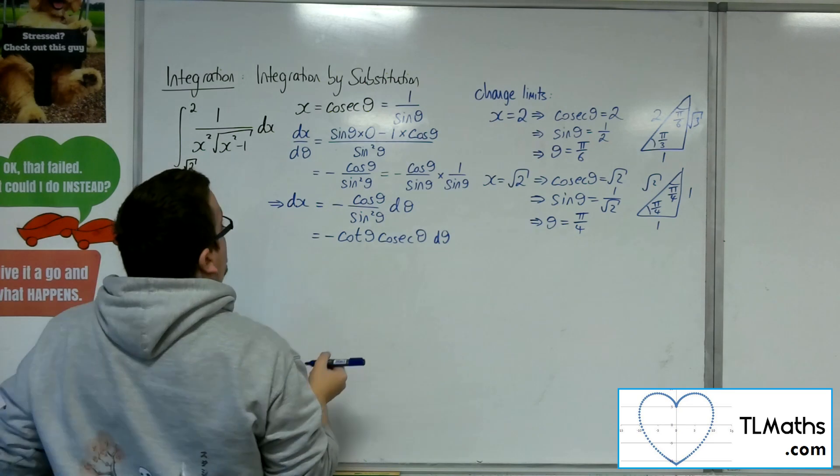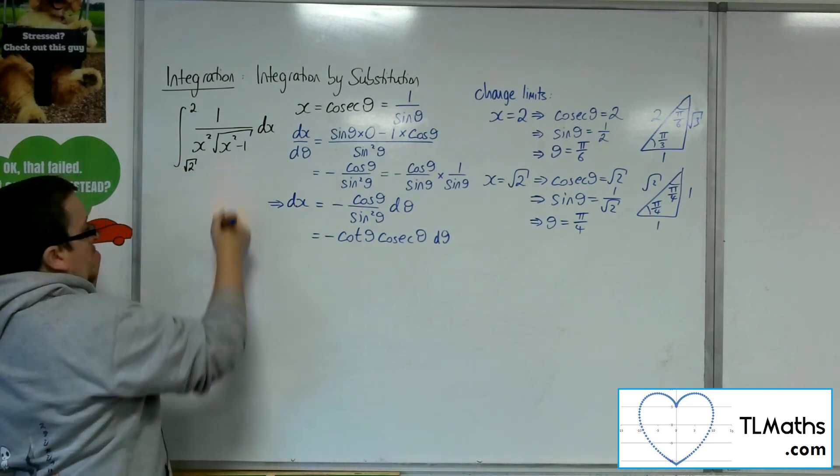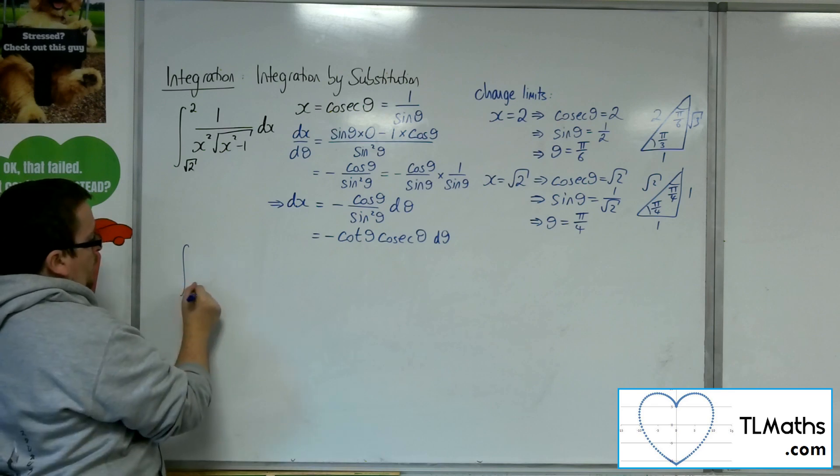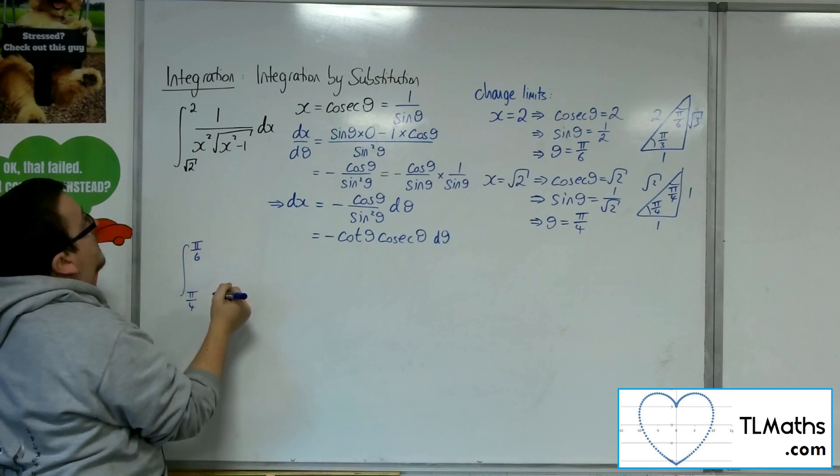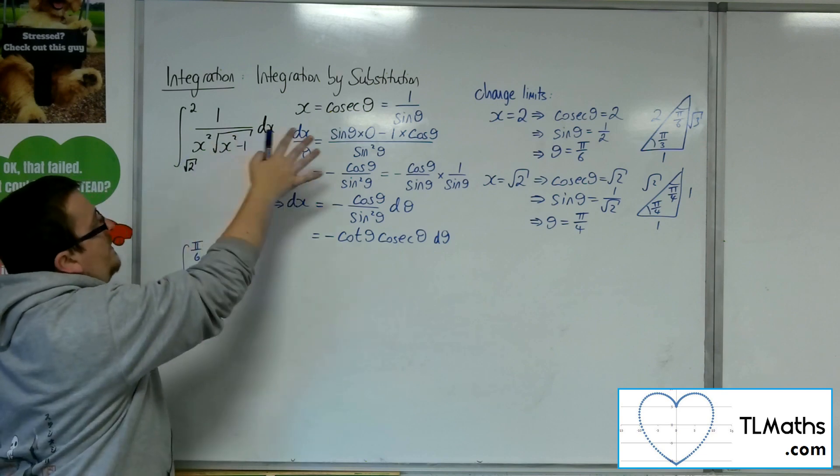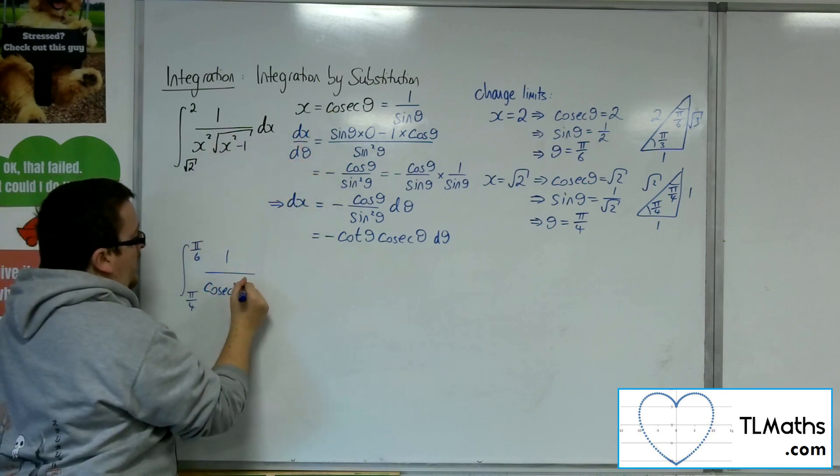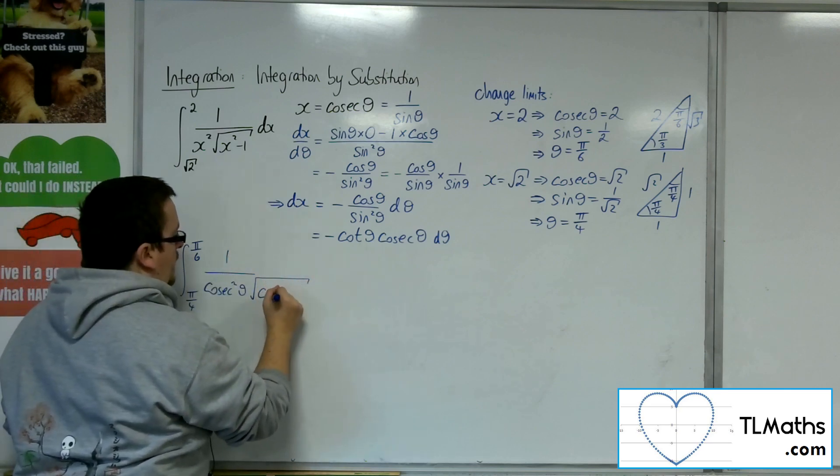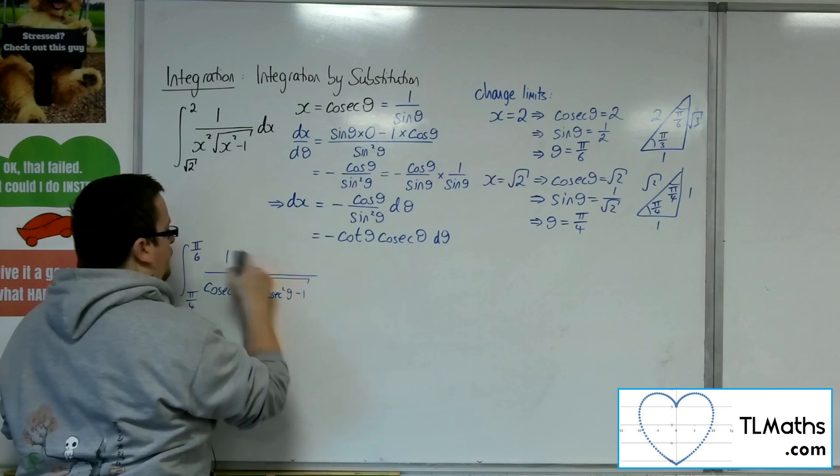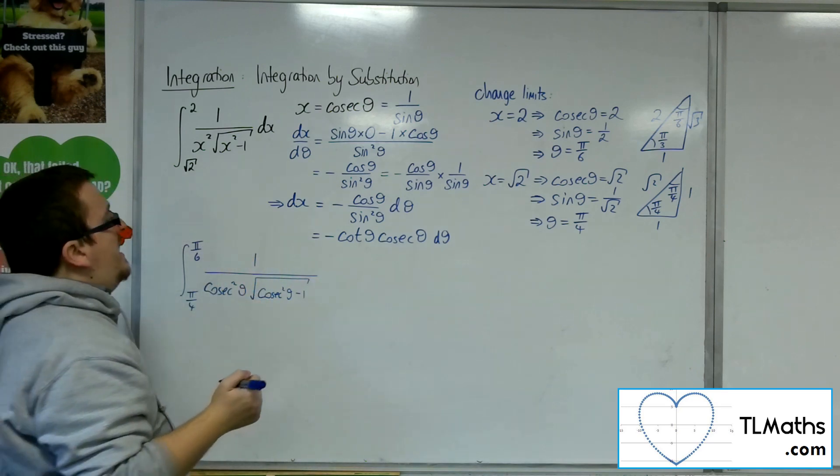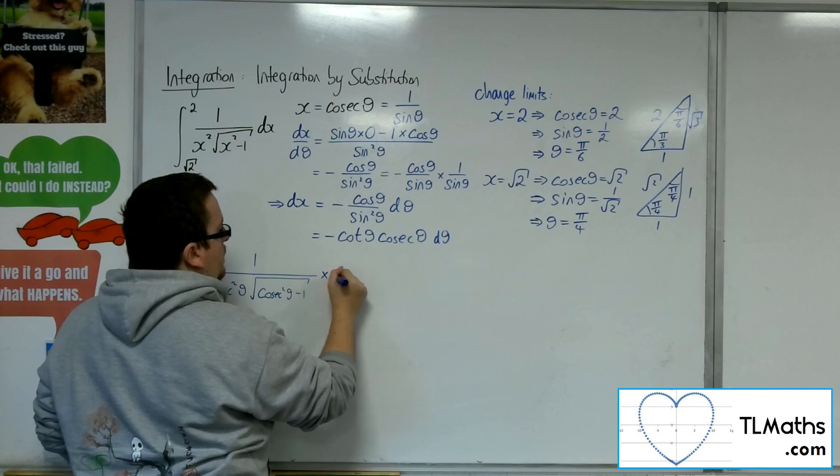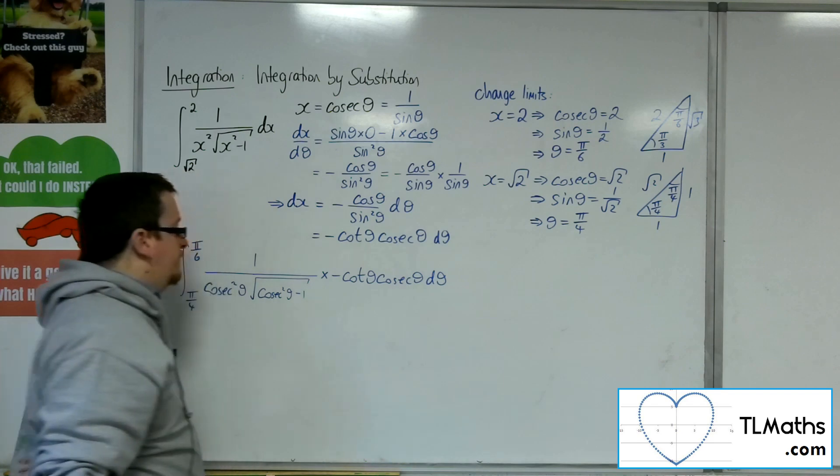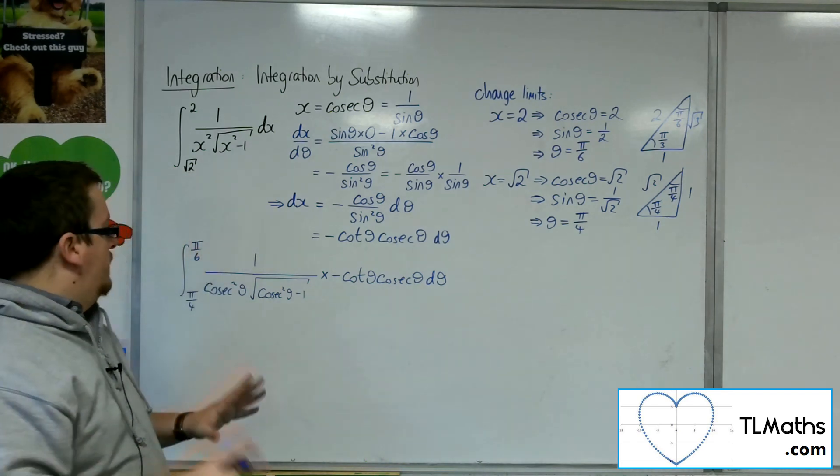So now let's see what we've got. So this integral is now evaluated between pi over 4 and pi over 6. So we've got the 1 over, now we've got x squared there, so we've got cosec squared theta. And we've got here cosec squared theta minus 1. Let's rewrite that. Now the dx is this minus cot theta cosec theta d theta. So that's currently what I've got.